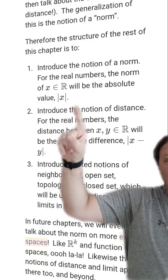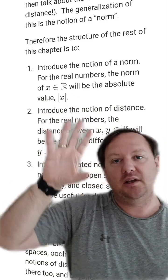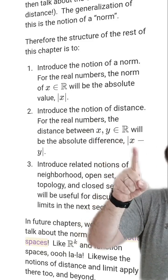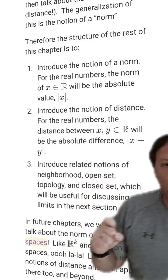The norm on the real numbers is going to be the absolute value of x. Then we're going to use that to talk about the notion of a distance on the real numbers. The distance metric is going to be the absolute value of the difference of two real numbers.